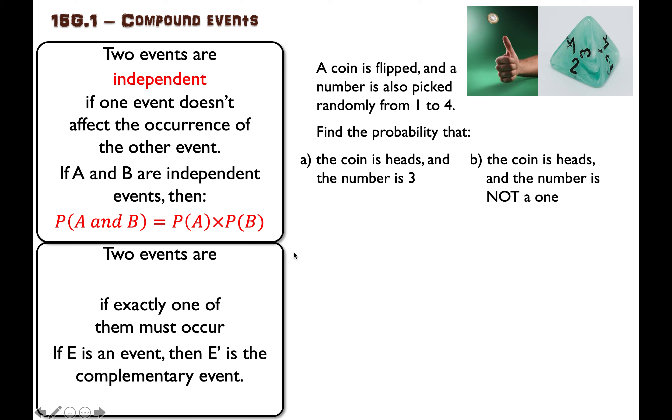Another word that is useful for us to know is complementary. And complementary means an event not happening. Two events are complementary if exactly one of them must occur.